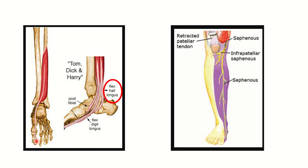In this picture we can see the saphenous nerve. The saphenous nerve arises from the femoral nerve and descends down along the medial border of the leg, and finally courses across the ankle joint and reaches up to the toe.